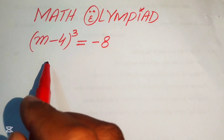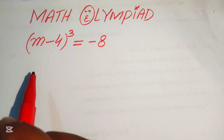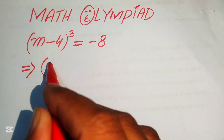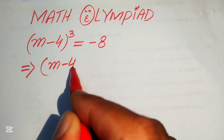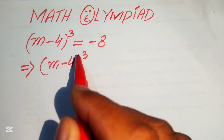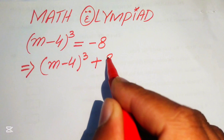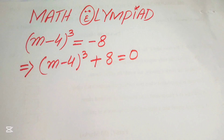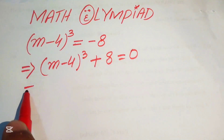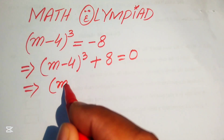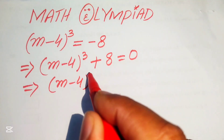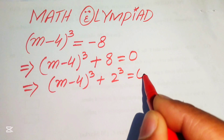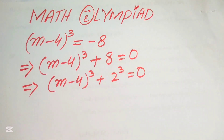The very first step is to rewrite this equation. On the left-hand side we have (M - 4)³, and we move -8 to the left-hand side so it becomes +8, giving us (M - 4)³ + 8 = 0. We then rewrite 8 as 2³, so the equation becomes (M - 4)³ + 2³ = 0.